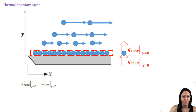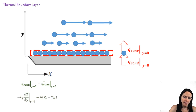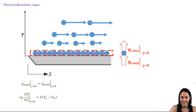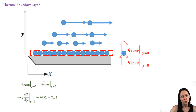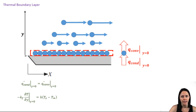Let's put this in terms of heat flux to eliminate that area. We use Fourier's law and Newton's law of cooling to define those heat fluxes. Note that for Fourier's law, we're using the thermal conductivity of the fluid, since we're doing an energy balance on the fluid molecules at the surface of the plate with zero velocity, and thus are transferring heat by conduction.